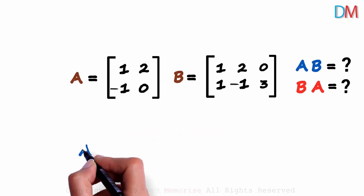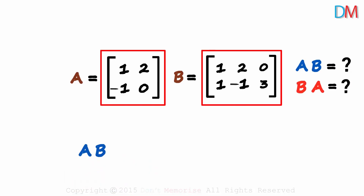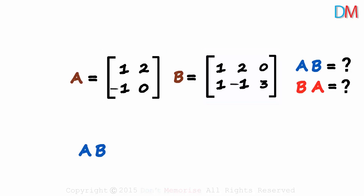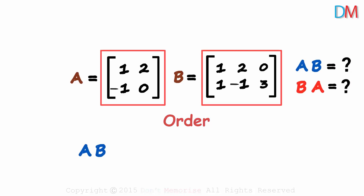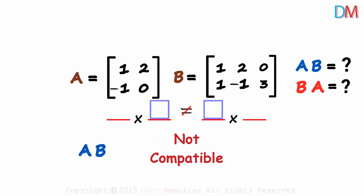Let's find AB first. Before we multiply, we need to check if they are compatible or not. Only if they are compatible do we multiply them, else we can't. How do we check for compatibility? We find the order of each matrix and check if the second and the third numbers are equal. If yes, then they are compatible, else they are not.